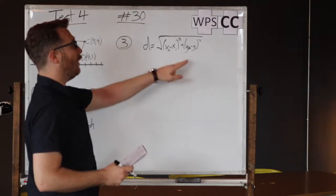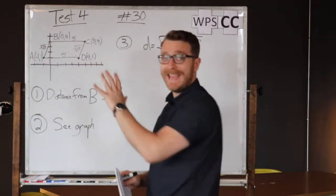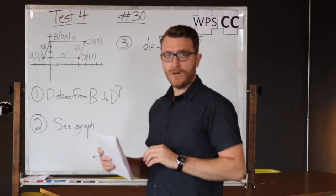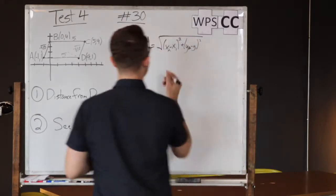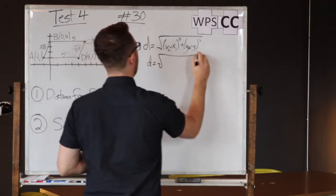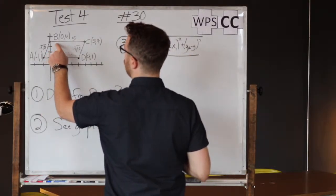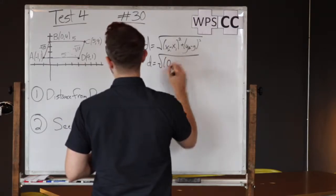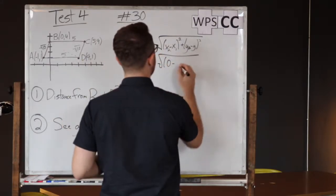All right, so we are going to take the x and y coordinates from both B and D, plug them into our formula, and solve to find the distance between them. The distance is the radical of, now what is the first x coordinate? Zero minus the second x coordinate, which is four.